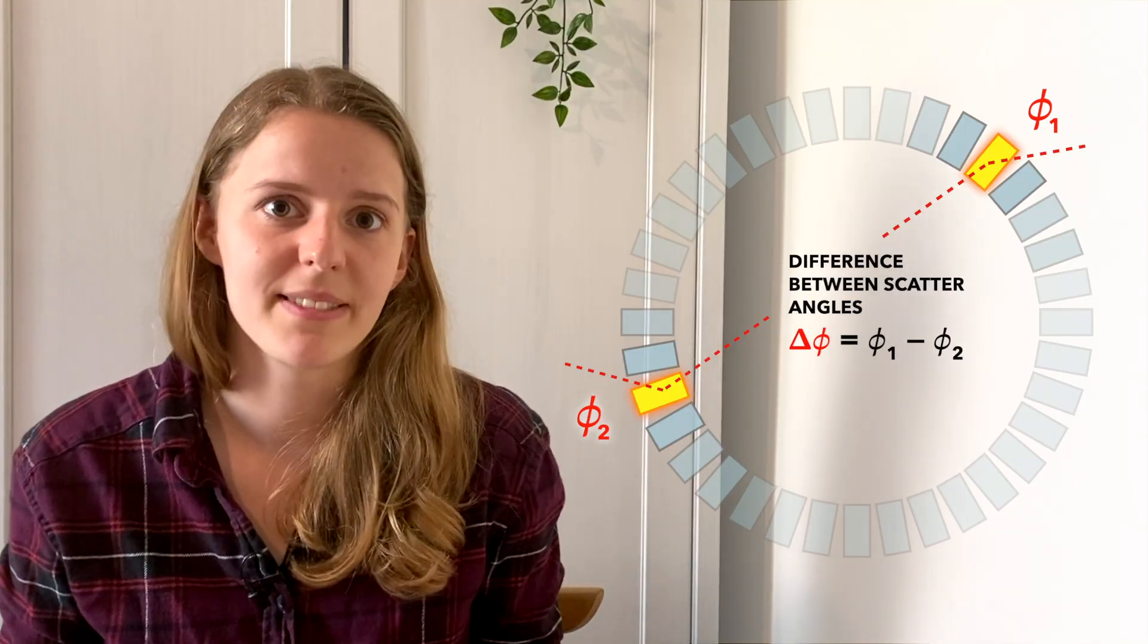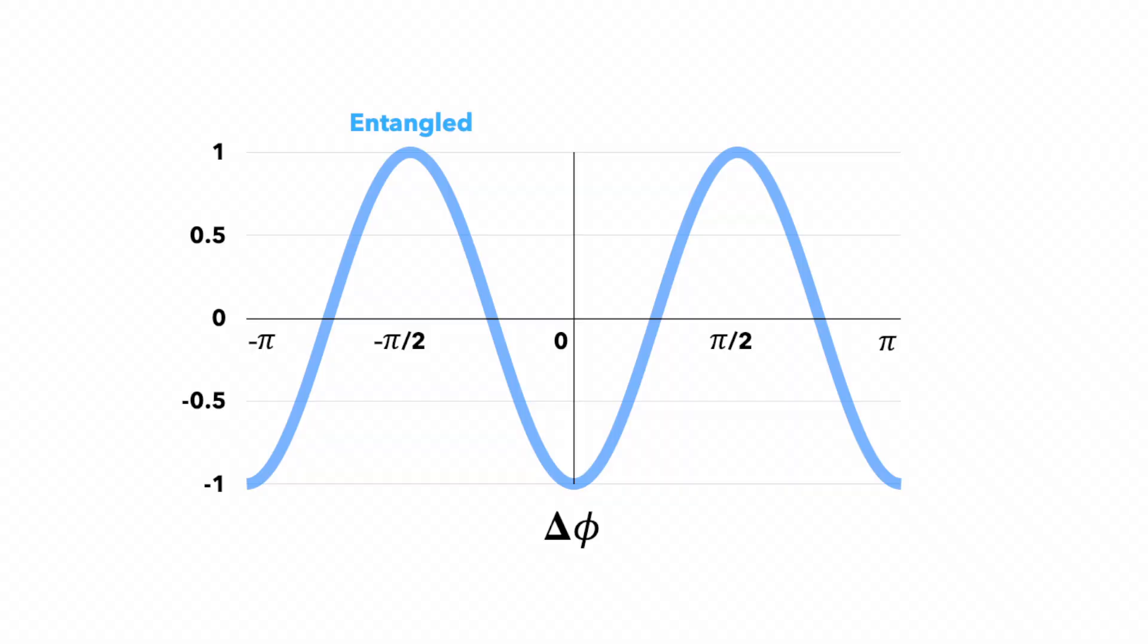If the photons are entangled, delta phi looks like a cosine function, which means it's much more likely the photons scatter at right angles to each other than in the same direction.